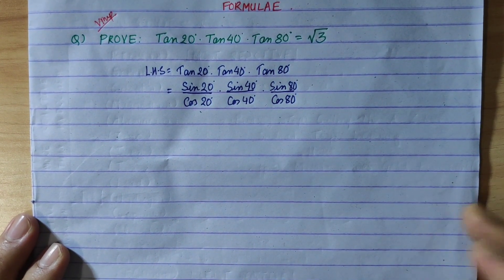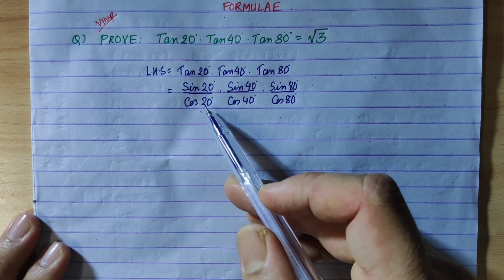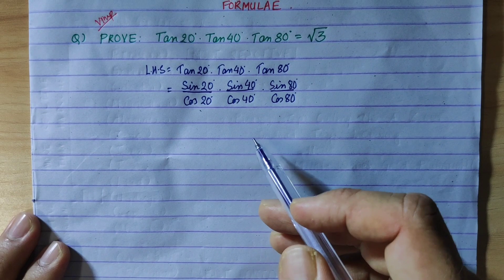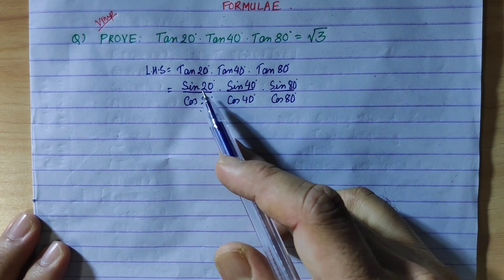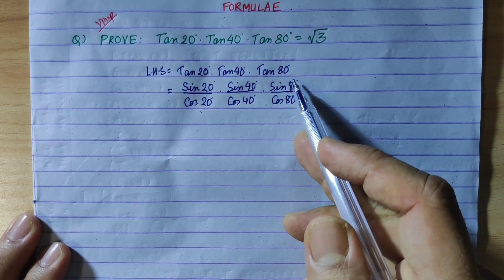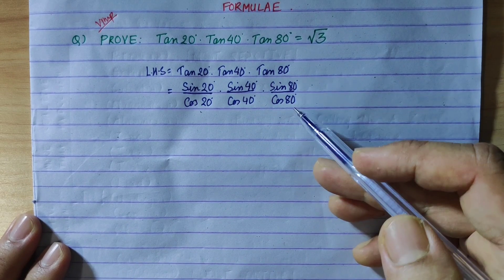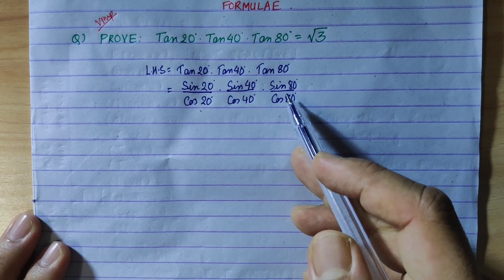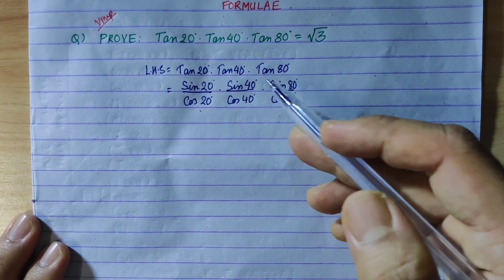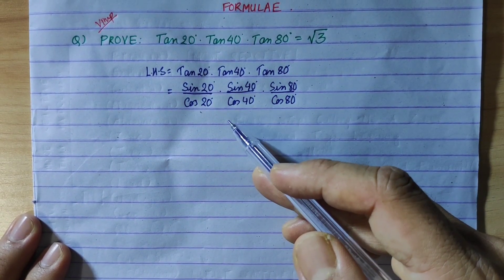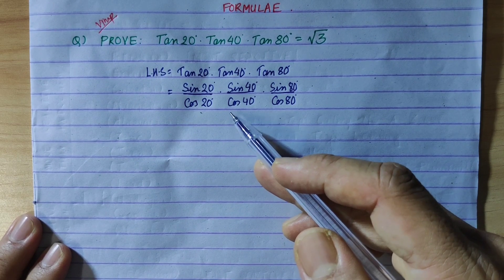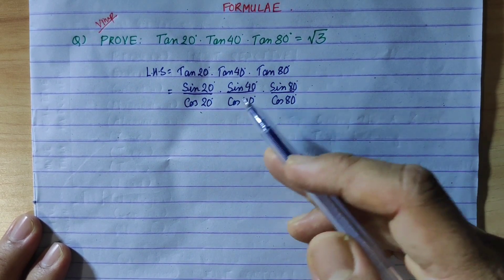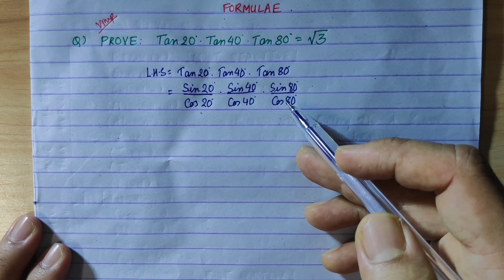Now, the angles cos20, cos40, cos80 will be simplified in the next step. Sin and cos follow the common product-to-sum method. We will use the transformation formulas: 2sinAsinB and 2cosAcosB to simplify the numerator and denominator.